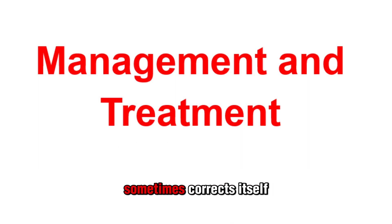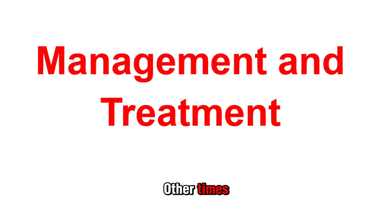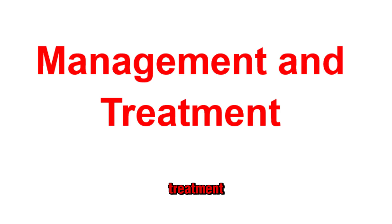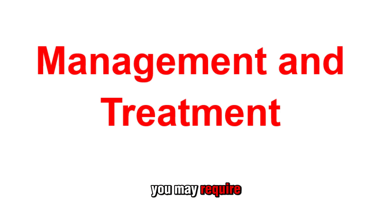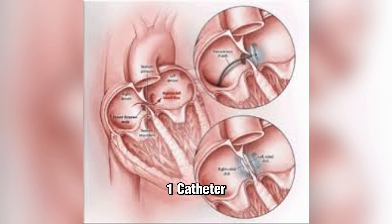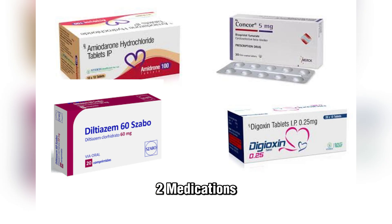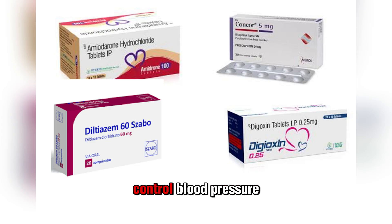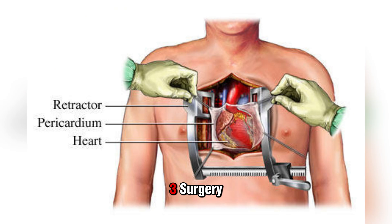Management and Treatment: Acyanotic heart disease sometimes corrects itself during childhood. Other times, the heart defect remains into adulthood but doesn't require treatment. But if the defect eventually causes symptoms, treatment options may include: 1. A catheter procedure to place a plug into the defect, 2. Medications to help the heart work more efficiently or to control blood pressure, 3. Surgery to close the defect.